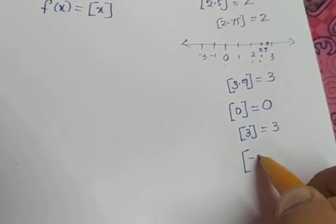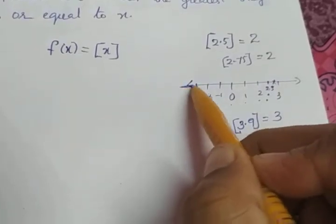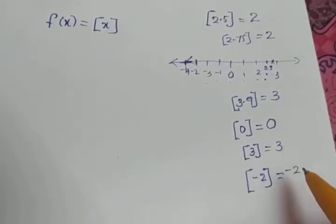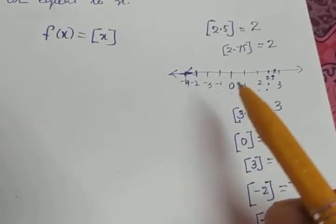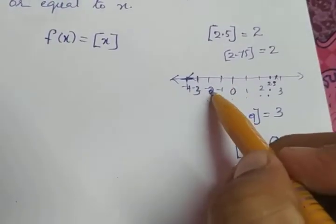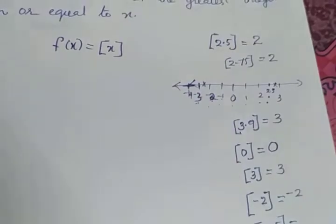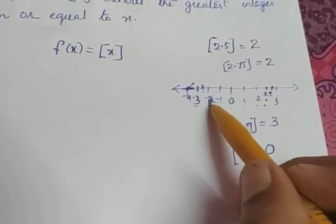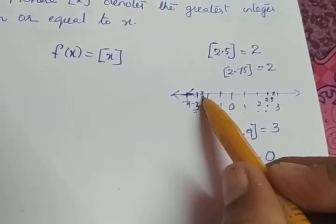If I need to find the greatest integer of −2, the answer is −2 itself. Now, for −2.5: it lies between −2 and −3. The greatest integer less than −2.5 is not −2, because −2 is greater than −2.5. So, ⌊−2.5⌋ = −3.